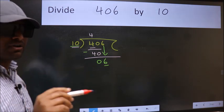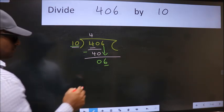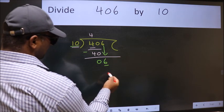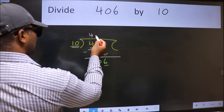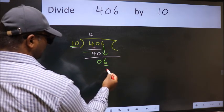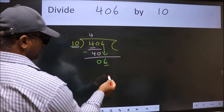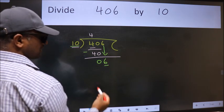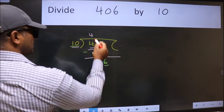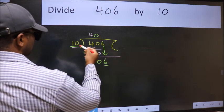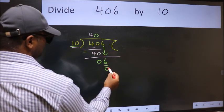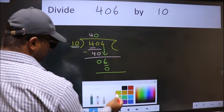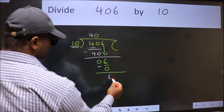Instead of that, what we should think of doing is, which number should we take here. If I take 1, we will get 10. But 10 is larger than 6. So what we do is we take 0. So 10 into 0, 0. Now we subtract. We get 6.